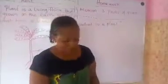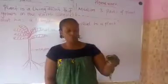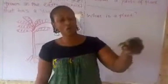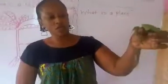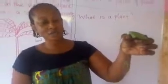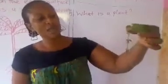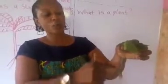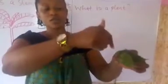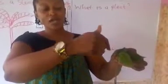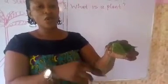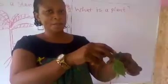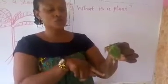I brought a plant to the class to show us a living plant, not a drawing or a picture. This is the root. Remember, the parts of plants are roots, stem and leaves. The root supplies water and nutrients to the plants. Without this root supplying those things, the plants will die. That shows you how important the root is.